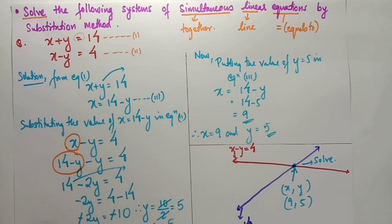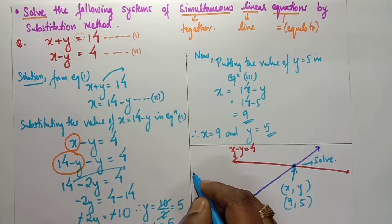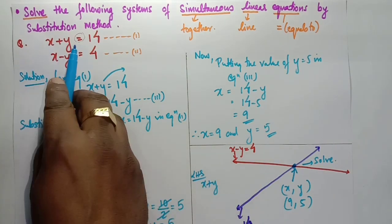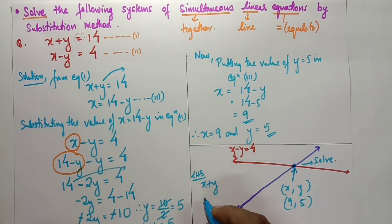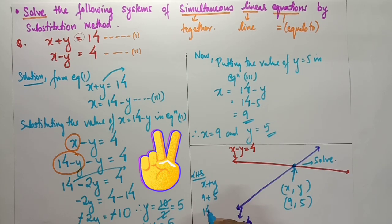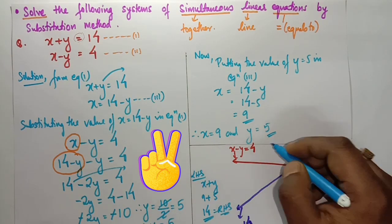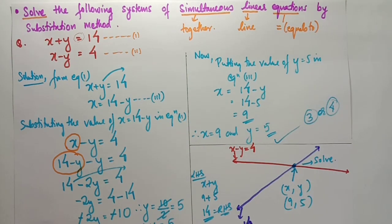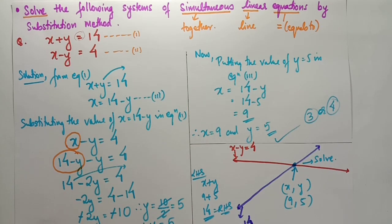You can also verify the answer. In equation one, left-hand side: x plus y equals to 9 plus 5 equals to 14, and the right-hand side is also 14. The answer is correct and you will get full 3 or even 4 marks. Now let's do the second equation.